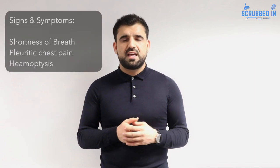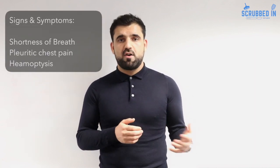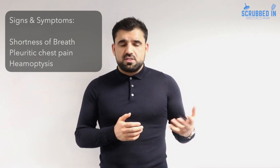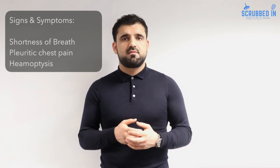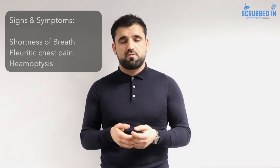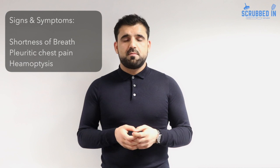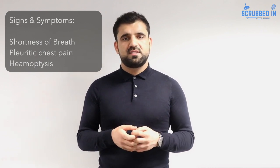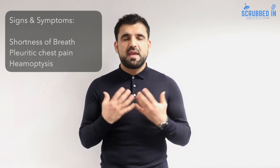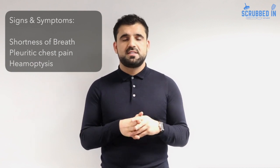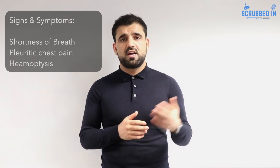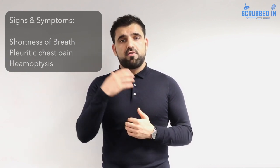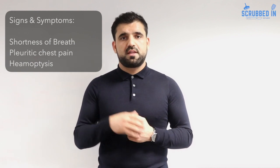When we have a clot in the lung, what are some of the signs and symptoms we would expect? The symptoms patients usually complain about include shortness of breath, and that makes sense because they're getting less oxygen into their blood. The other symptom they might complain about is pleuritic chest pain — pain that gets worse when you breathe in, because the pleura, the covering of the lung, is getting irritated. They might also have a cough and cough up blood, which is known as haemoptysis.